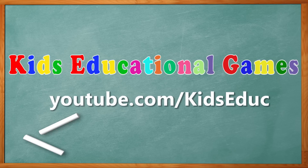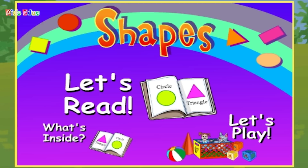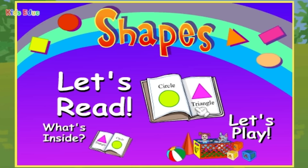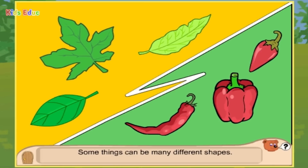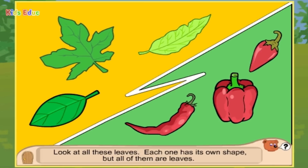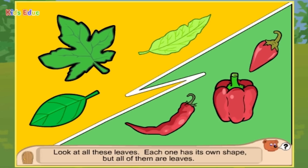Kids Educational Games: Shapes. Blocks and clocks and tables too, the sun and the clouds and even you — everything has a shape. Some things can be many different shapes. Look at these leaves. Each one has its own shape, but all of them are leaves.